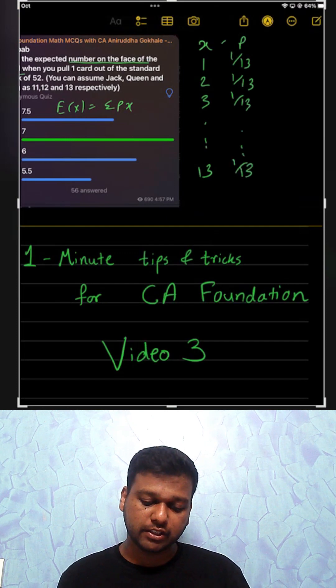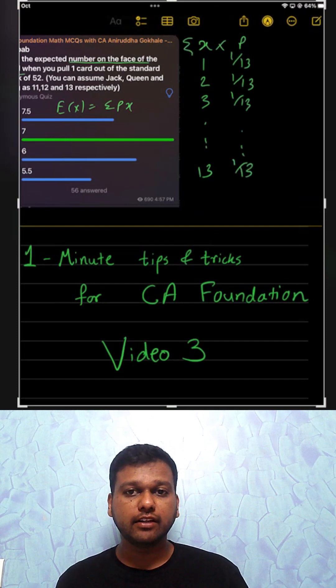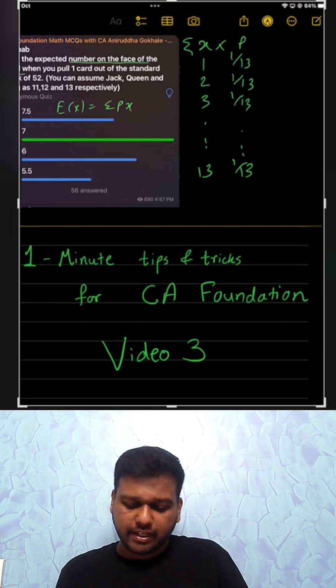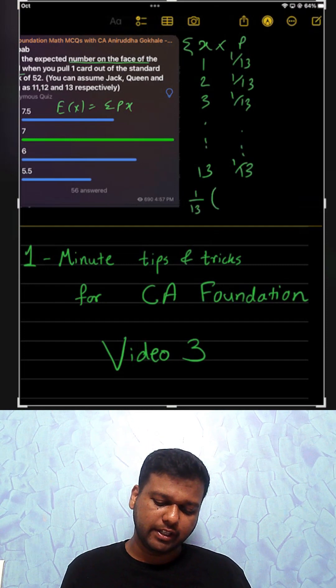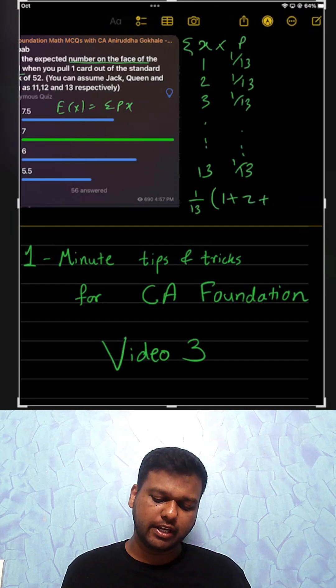We have to find summation px. So we have to multiply this and then add it. If we have to add it, let's take 1 by 13 common. So if we take 1 by 13 common, we just have 1 plus 2 plus 3 up to plus 13.